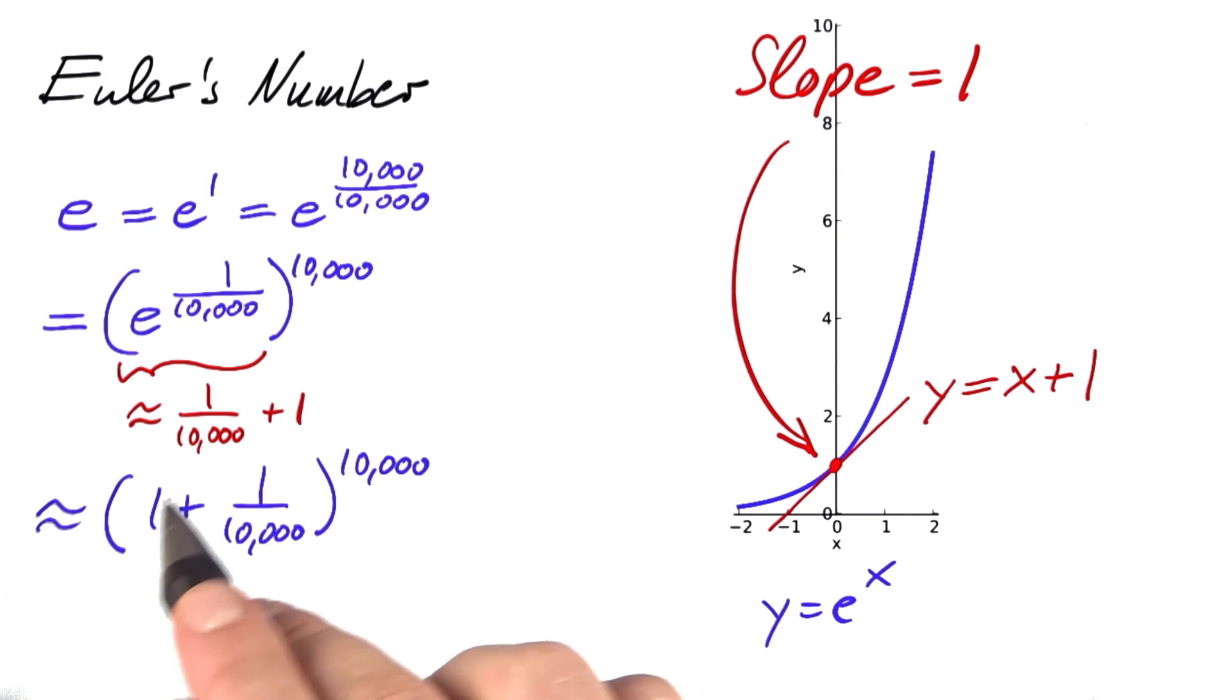Guess what? We have an equation, an approximate equation for Euler's number. The official definition for Euler's number is the following.